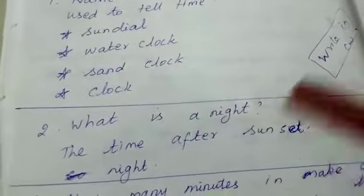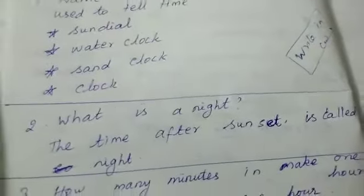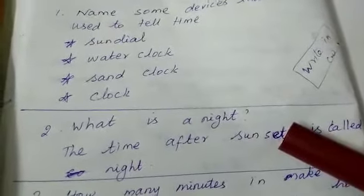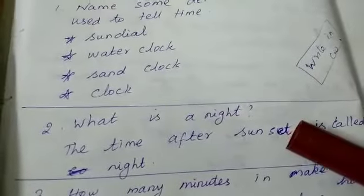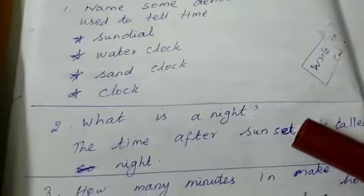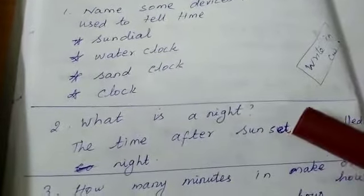So what is a night? Night is nothing but the time after sunset. And the morning, what is the day time? It's the time when the sun shines. Sun rise, it's known as day time, isn't it?